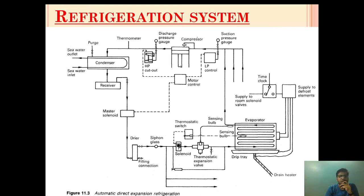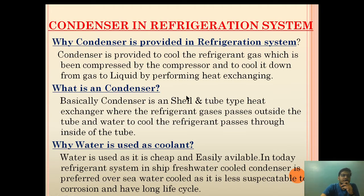Basically, the purpose of condenser is to extract the heat which has been absorbed during the work done of compression and to cool it down and change it into liquid refrigerant. So what is a condenser? Basically, the condenser is a shell and tube type heat exchanger where refrigerant gas passes outside the tube and water to cool the refrigerant passes through inside the tube.